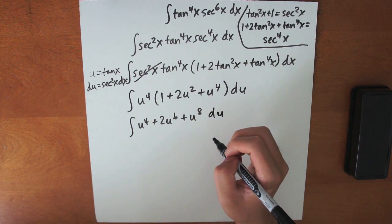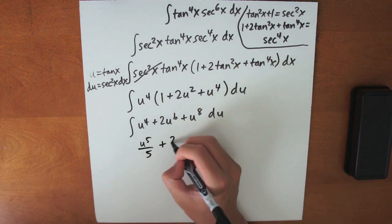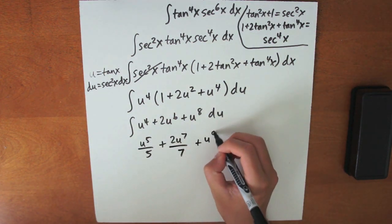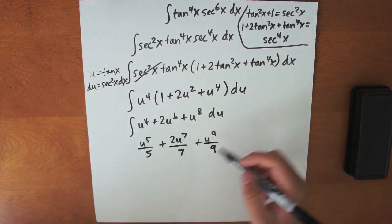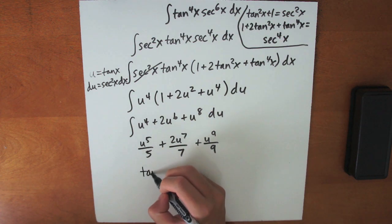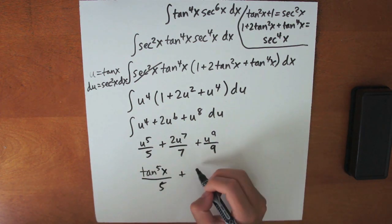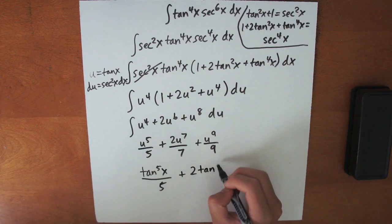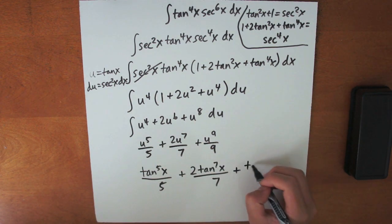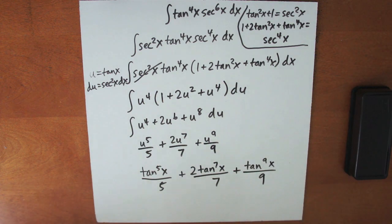Evaluating the integral, we get u to the fifth divided by 5 plus 2u to the seventh divided by 7 plus u to the ninth divided by 9. That's our final answer.